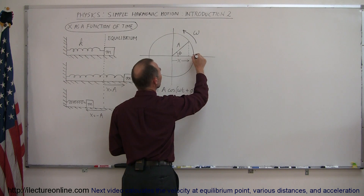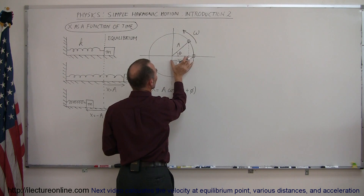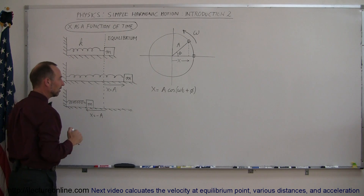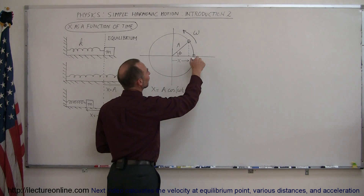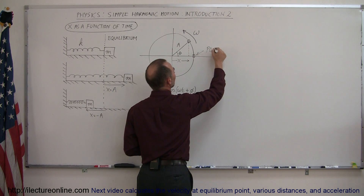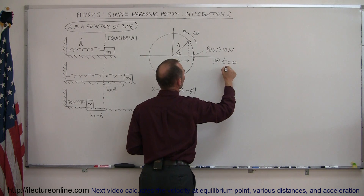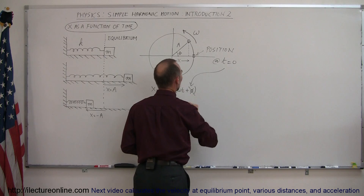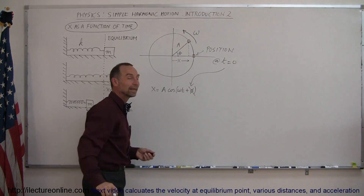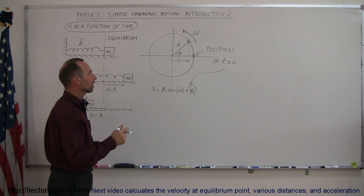The phase angle is only needed if the object is not at the maximum position when t equals zero. If the mass is at the end of the phasor at t equals zero, we don't need a phase angle. But if it's anywhere else at t equals zero, we need to include the phase angle. For now, let's make things simple and ignore the phase angle.